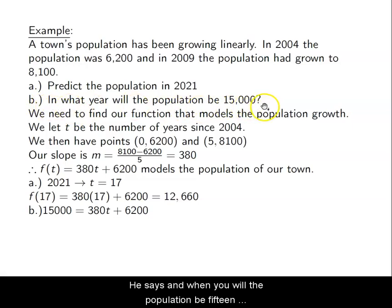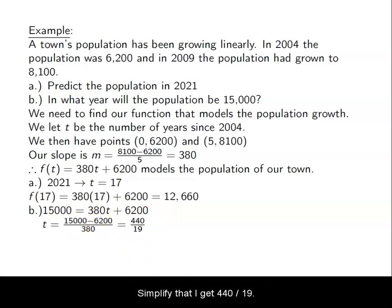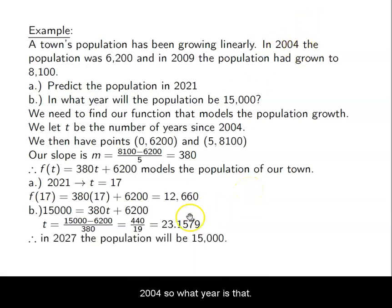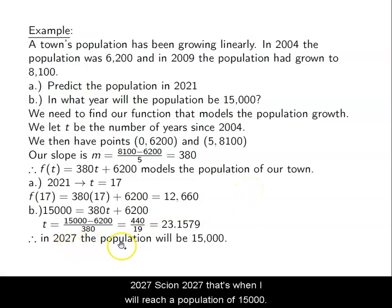B says in what year will the population be 15,000? So I take 15,000 and I set it equal to my function value. My output for my function needs to be 15,000. So instead of writing f(t), that's what the output is going to be. So my output is 15,000. It's on the outside of my equation on the opposite side, and I just solve for T. So I'm going to subtract 6200 and divide by 380. Simplify that, I get 8800/380, which is approximately 23.1579. So about 23 years after 2004. So what year is that? 2027. So in 2027, that's when I will reach a population of 15,000.